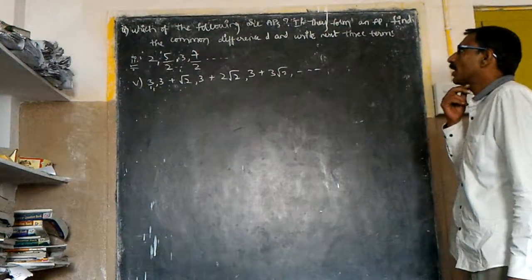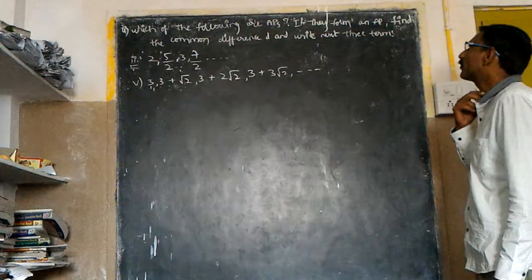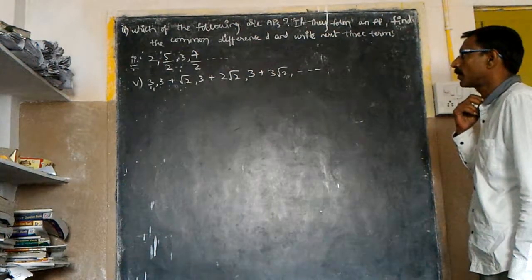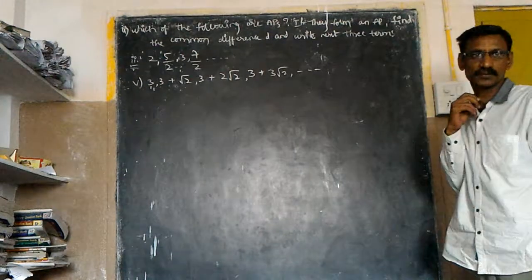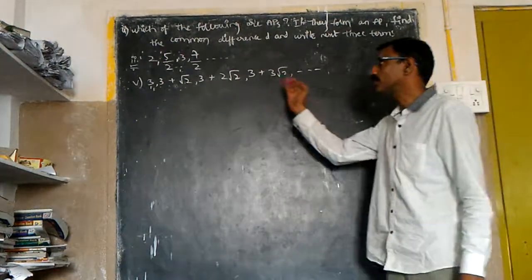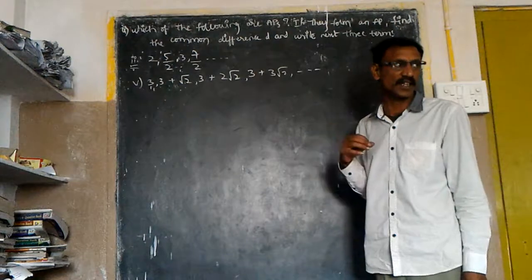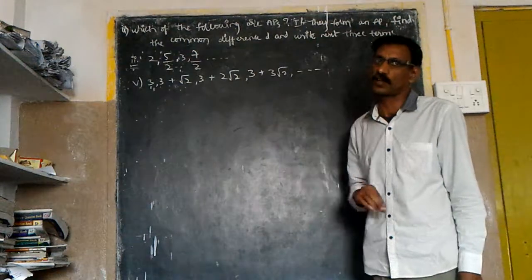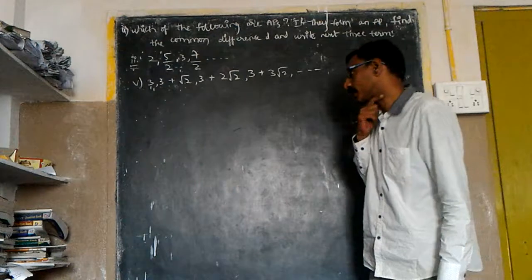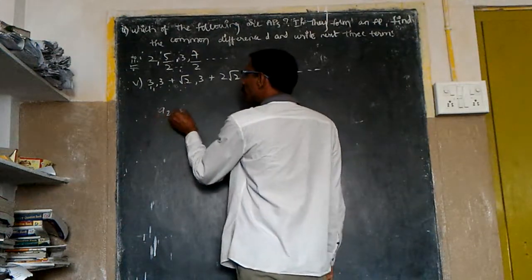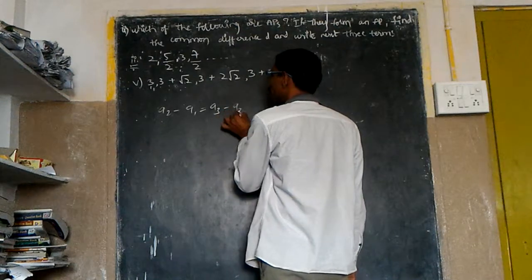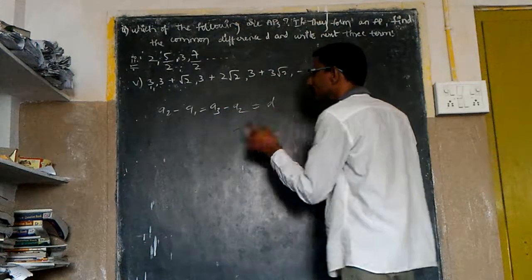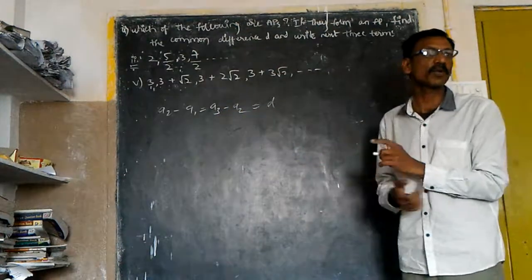Which of the following sequences are in A.P.? If they form an A.P., find the common difference and write the next three terms. Here are some sequences. First, see whether they are in arithmetic progression or not. To do that, I will take A2 minus A1 equals A3 minus A2. This will help us understand if they are in arithmetic progression.